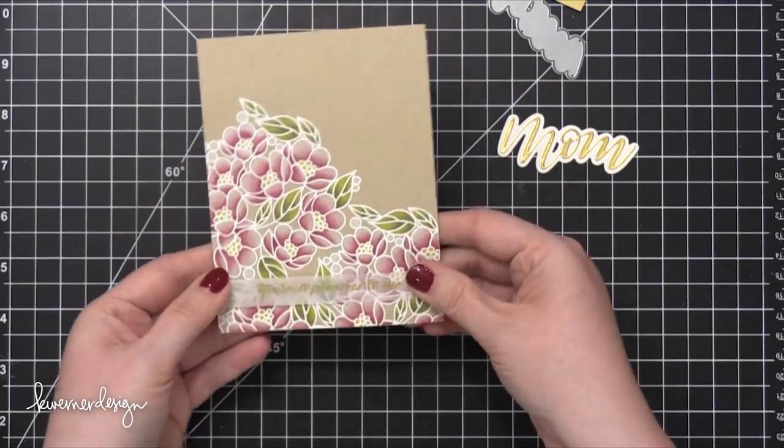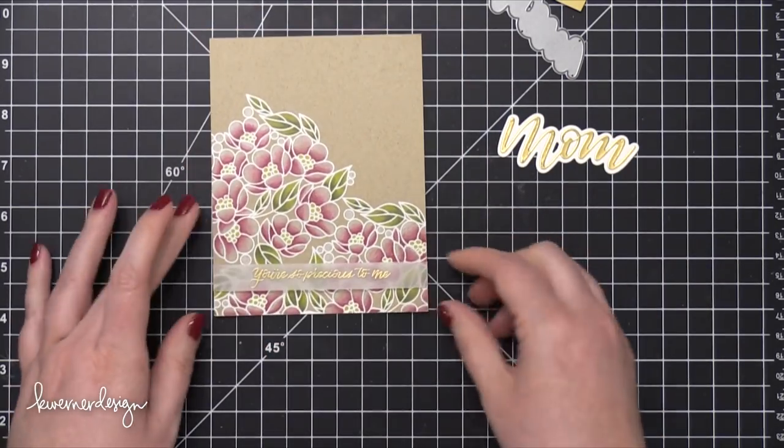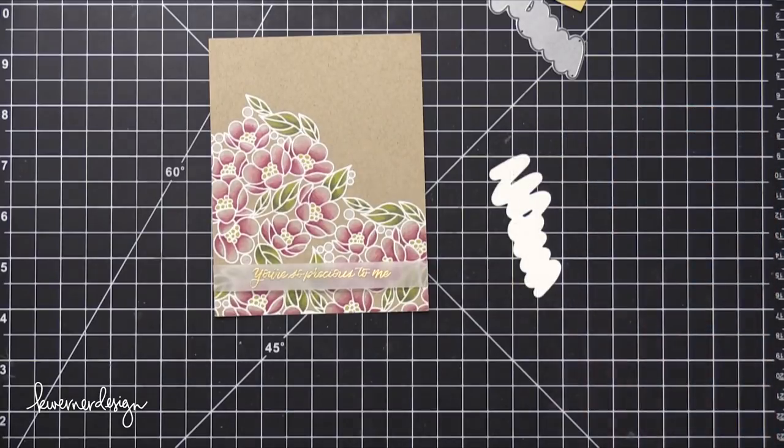I wrapped that vellum piece around and then I added some foam adhesive to the back of the Mom die cut.